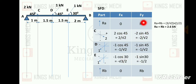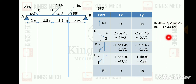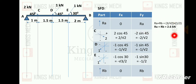Taking F of y equal to 0: Ra plus Rb equals minus 2 minus 1 minus 1. After simplification, Ra plus Rb equals 2.6 kilo newton.